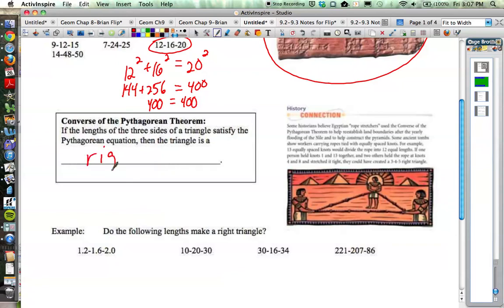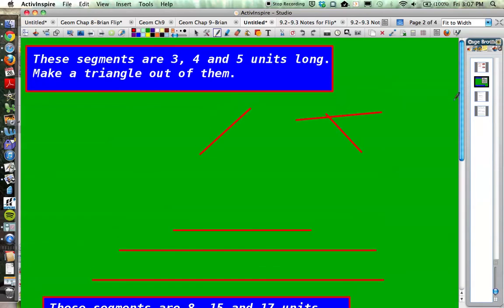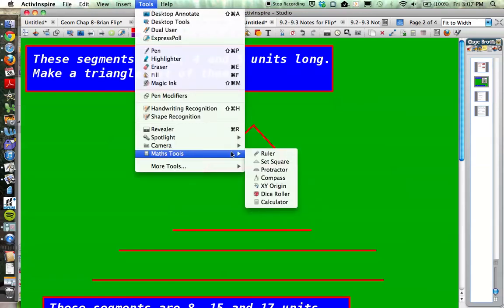That's what the converse says. In other words, if we looked at these segments over here - they are of lengths 3, 4, and 5. Make a triangle out of them. What type of triangle would we end up with? Well, if we start to put them together, we have something like that, and then if we measure the angle there...